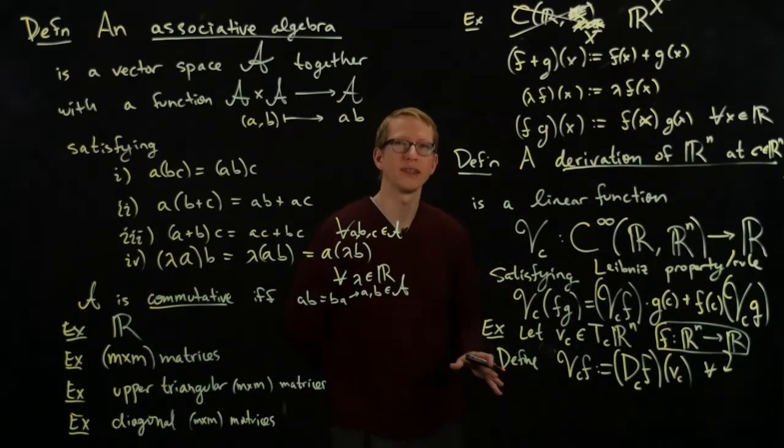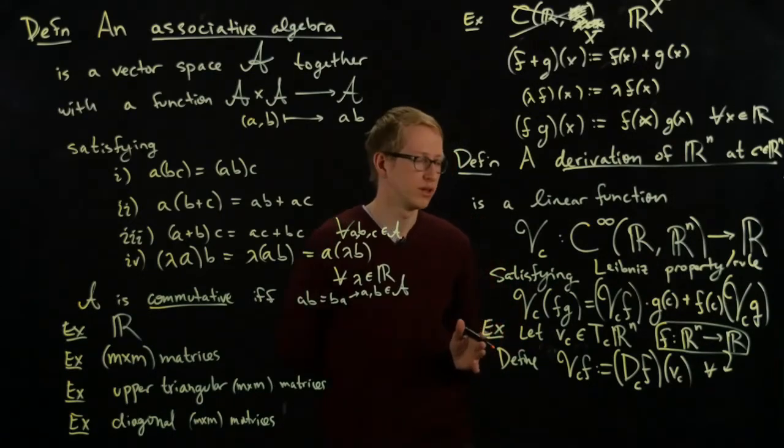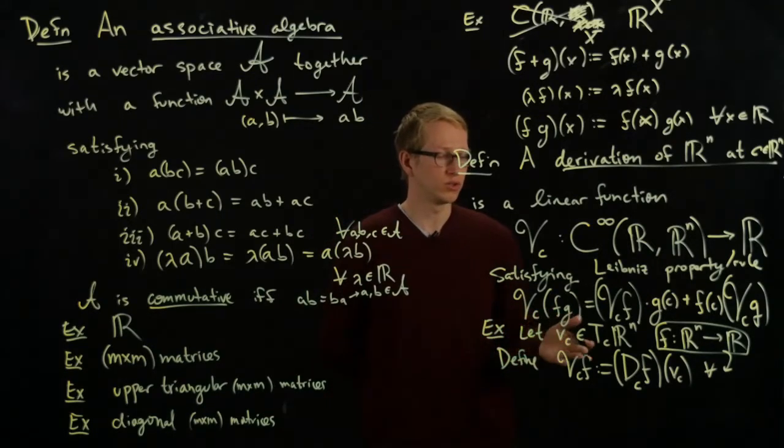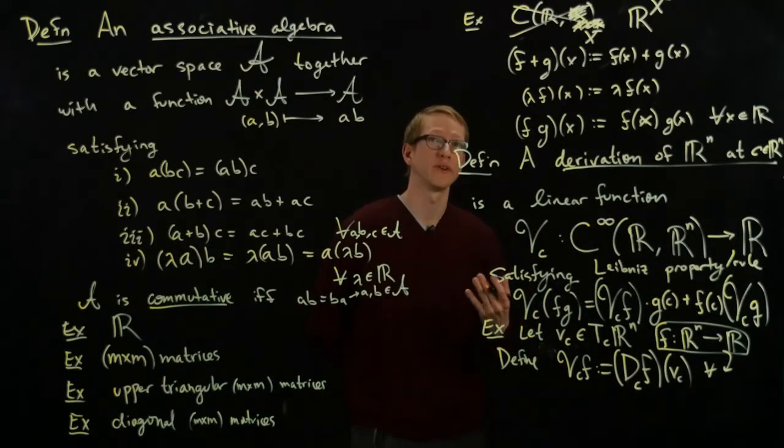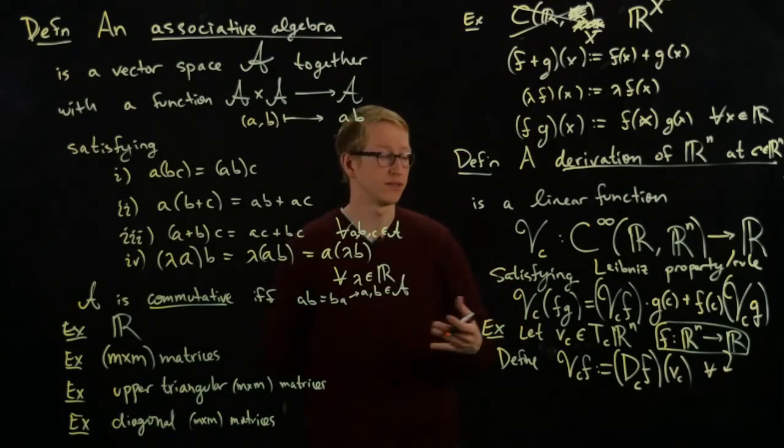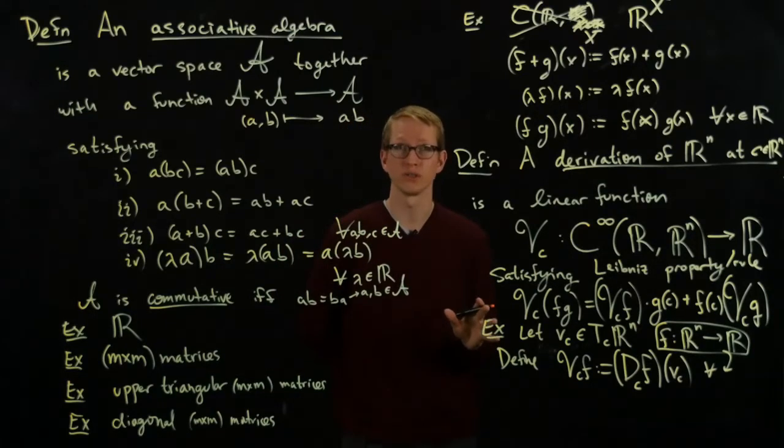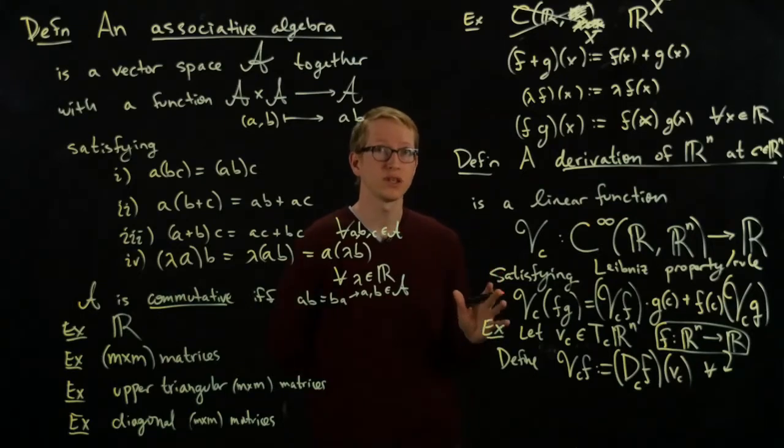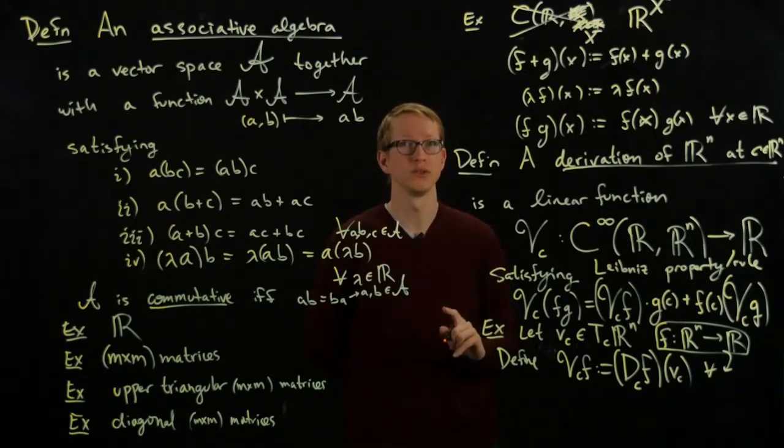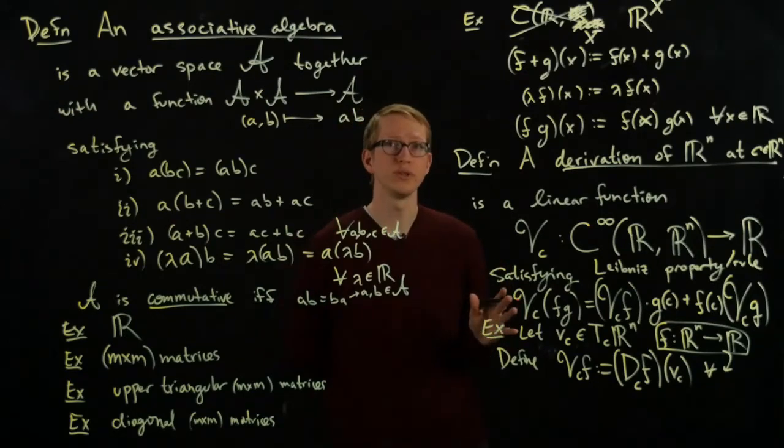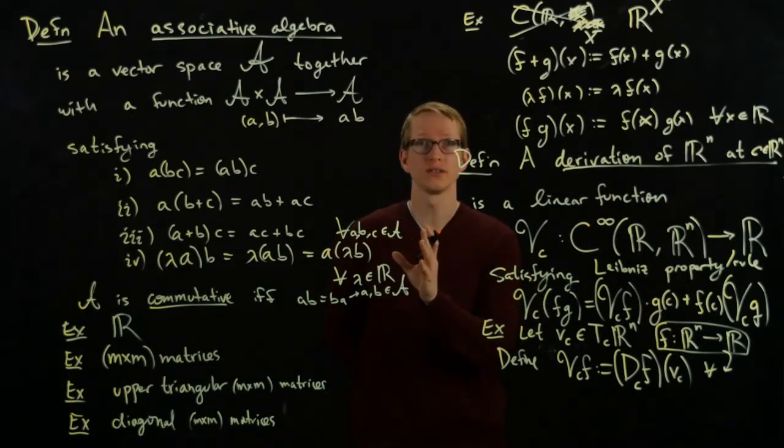And so now you might wonder, okay, this gives us an example of a derivation of R^n at C. Are there any other examples? Namely, do all examples come from such vectors? If you give me a vector, I can give you a derivation. But if I give you a derivation, can you give me a vector that comes from it in this particular formula? And the surprising result, the really surprising result, is that that's true. Every such derivation does come from such a vector. And there's a one-to-one correspondence between these two descriptions. And what we'll do next time is we'll prove this theorem for derivations in Euclidean space.